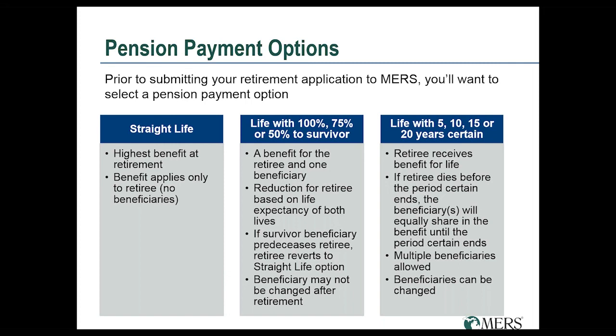The first is the straight life payment option, which is always the highest benefit option available at retirement. It's taken directly from the benefit formula with no other calculations or reductions. With the straight life option, you're making it a lifetime benefit for you as the participant, but when you pass away, no additional benefits go on to other beneficiaries.